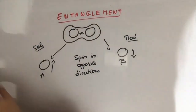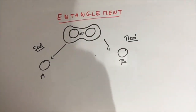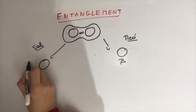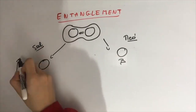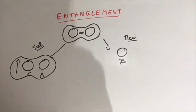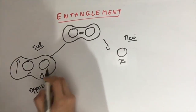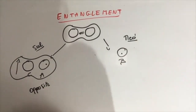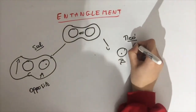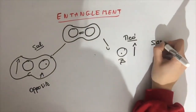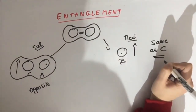Even though the distance between A and B is great, they are still connected to each other. If we entangle a third particle C that spins up with A, and we measure the entanglement of these two particles and find that they spin in opposite directions, and because A and B spin in opposite directions too, then we can conclude that B will instantaneously spin up just like C.